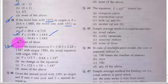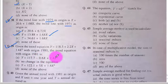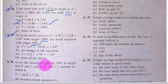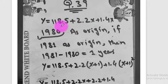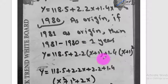Question number 39. Given the trend equation y = 118.5 + 2.2x + 1.4x² with origin 1980, the trend equation with origin 1981 — shifting forward by 1 year — is option C. Since 1981 − 1980 = 1 year, x is replaced by x + 1.